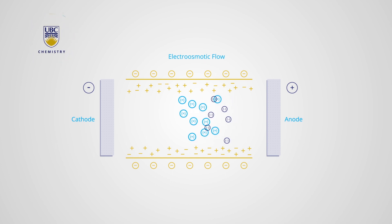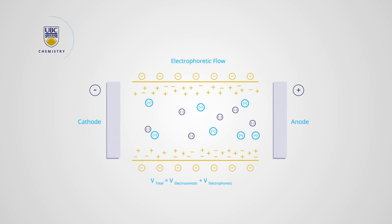The electroosmotic flow carries both the sample and the background electrolyte through the capillary from the anode to the cathode and detector. In addition to this, there is also the electrophoretic flow, which is the migration of cations to the cathode and anions to the anode. Depending on the pH and analyte charge, the electrophoretic flow usually has a small contribution to the ion's overall velocity.